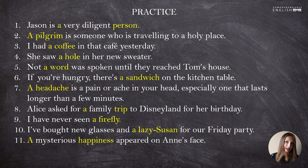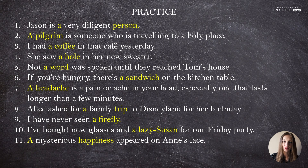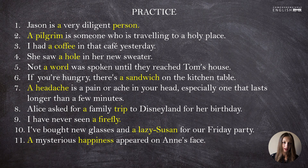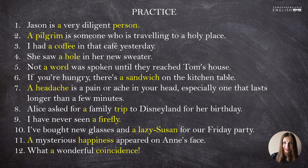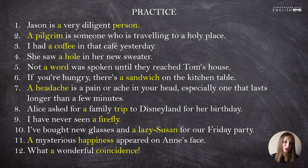'A mysterious happiness appeared on Anne's face' — happiness is an abstract noun, so this is the aspective function. The descriptive attribute 'mysterious' makes using 'a' obligatory. 'What a wonderful coincidence' — an exclamatory sentence starting with 'what,' which is a classifying function structure. We use 'a' because 'wonderful' starts with a consonant sound W.